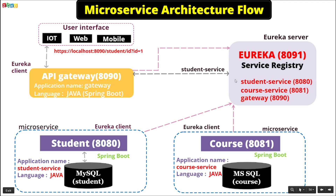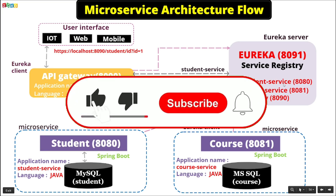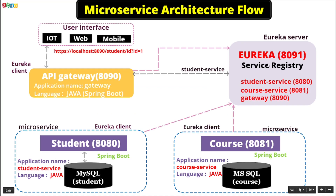The API Gateway sends the application name to Eureka for service discovery. Eureka server receives this application name, searches its directory for the IP and port, and finds that student-service is running on 8080. Since everything is running on localhost in this case, the IP is localhost — otherwise Eureka holds the actual IP address. It returns the address localhost:8080 to the Gateway, and then the API Gateway directly calls that particular microservice using the same URL, passing it through to the student microservice via service discovery using the Eureka server.